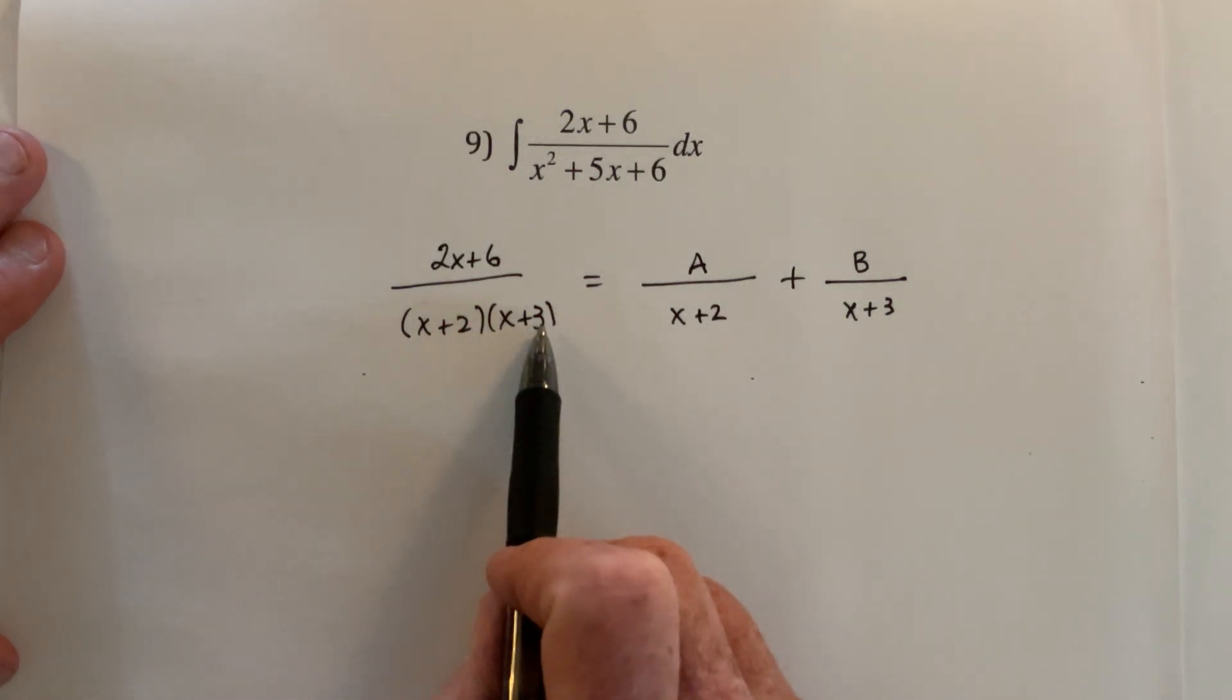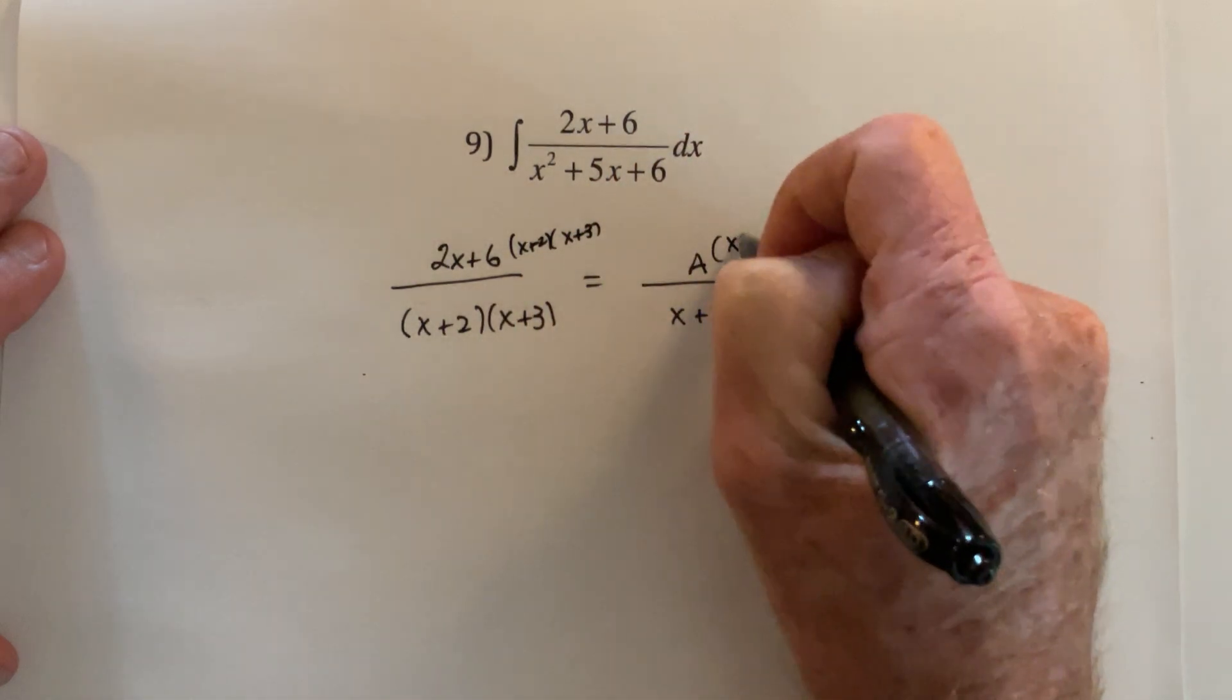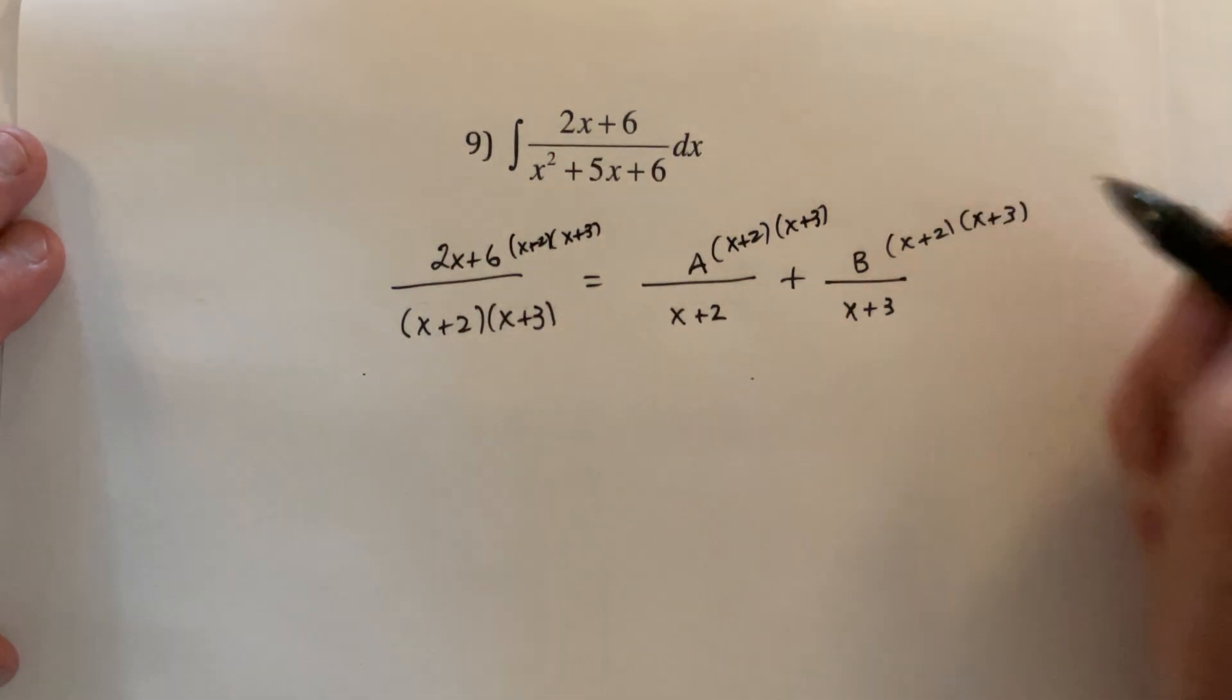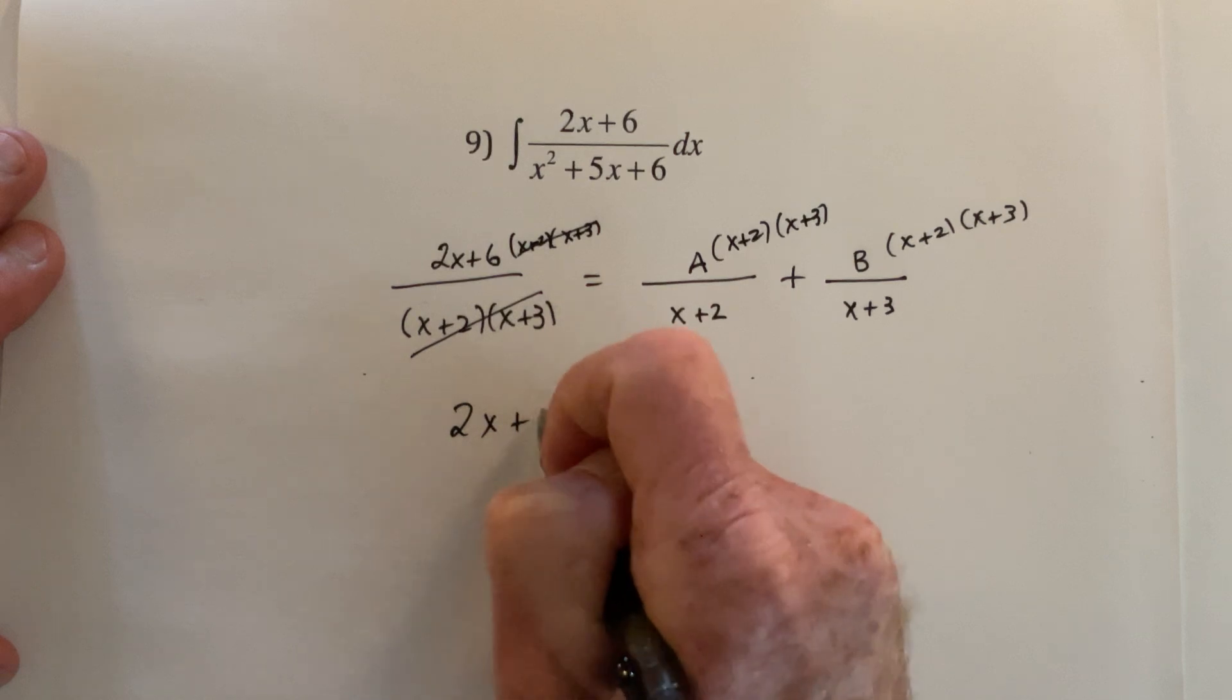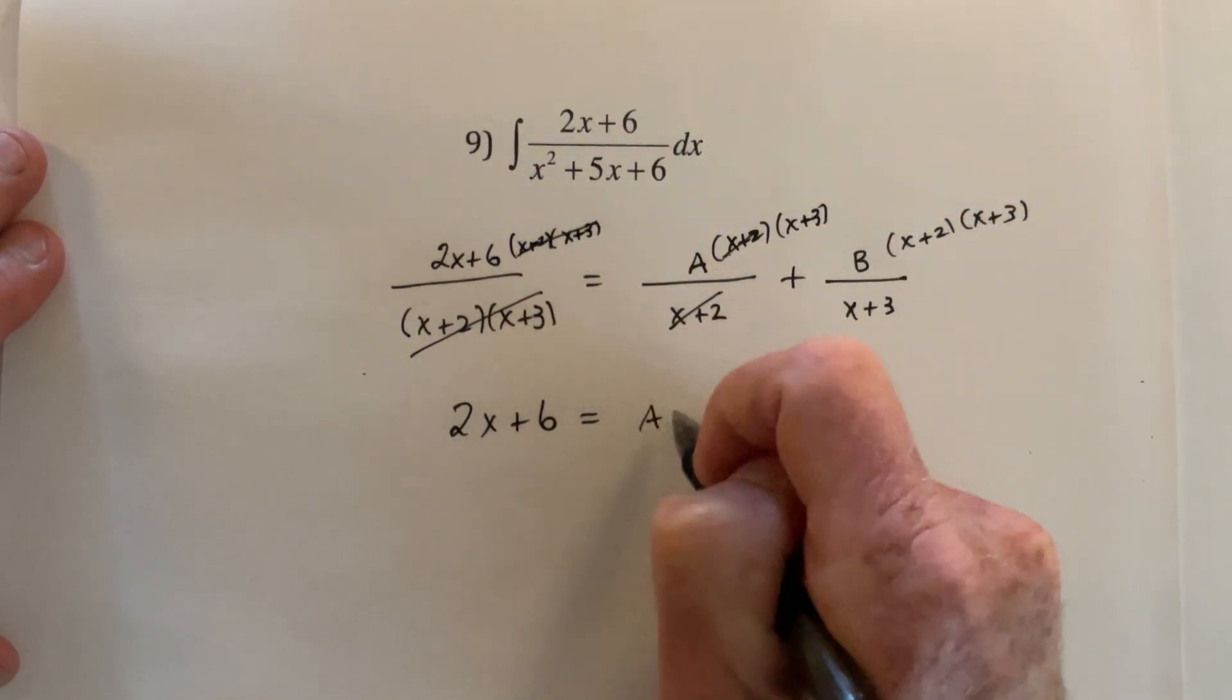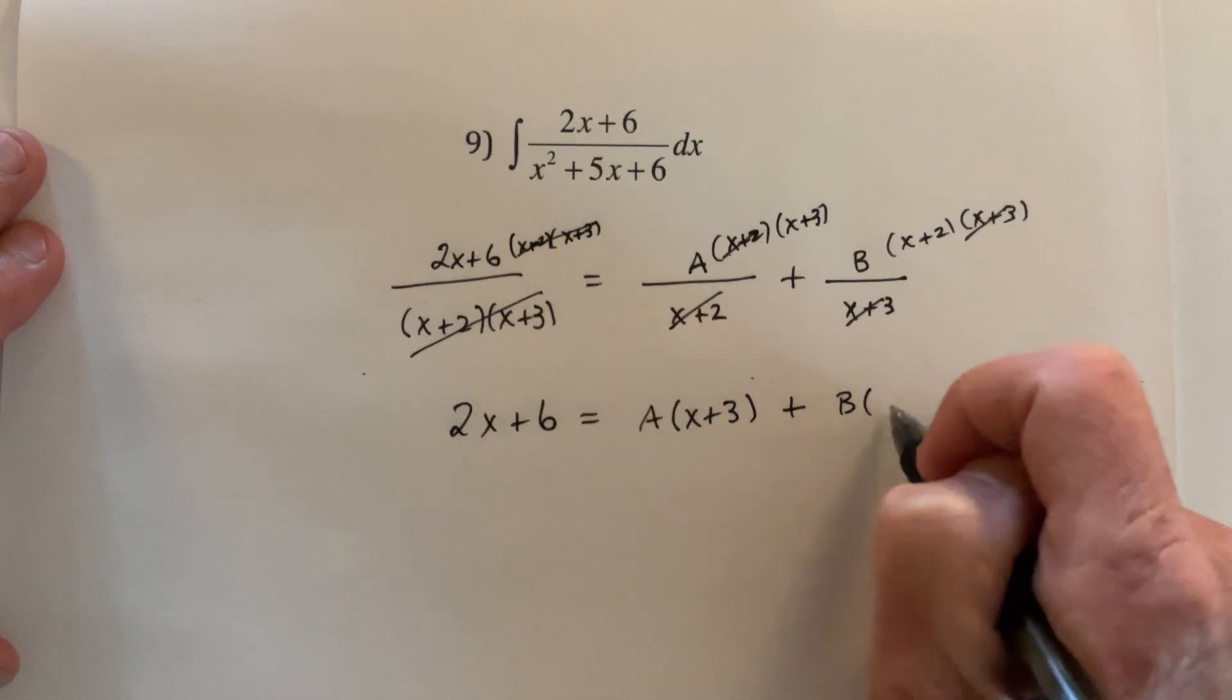And then you take this x plus 2, x plus 3, and multiply every term by it. So multiply this one by x plus 2, x plus 3, x plus 2, x plus 3, otra vez. And then start canceling. All of this cancels so all we get is the 2x plus 6. That happens every time, you just have the numerator. And then cancel, cancel, it leaves A times x plus 3. And then cancel, cancel, it leaves B times x plus 2.